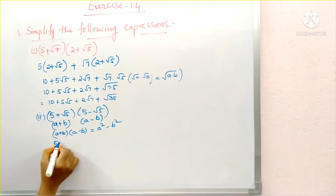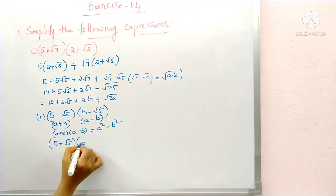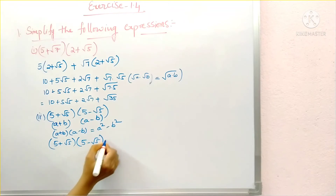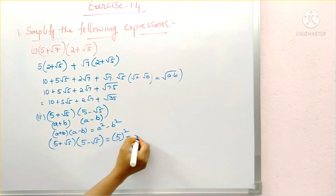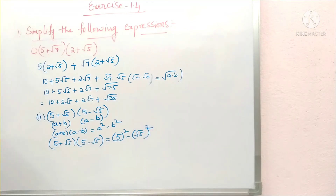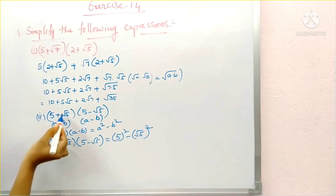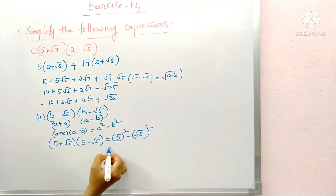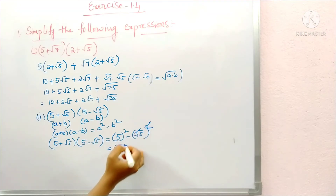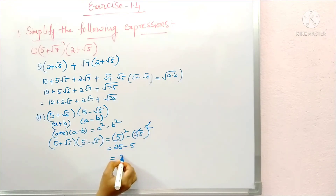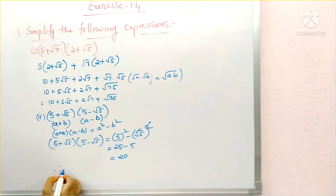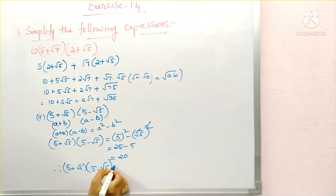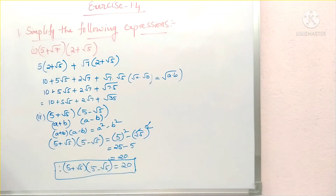So 5 plus root 5 into 5 minus root 5 equals 5 square minus root 5 whole square. In the place of a we have 5, and in place of b we have root 5. So 5 square is 25, and here the square root gets cancelled, leaving 25 minus 5 which equals 20. Therefore 5 plus root 5 into 5 minus root 5 equals 20.